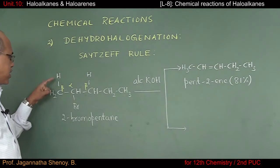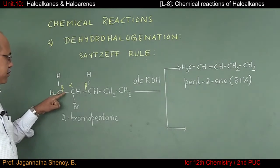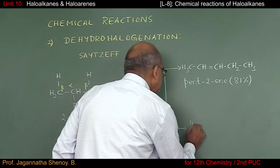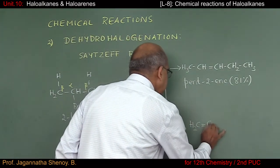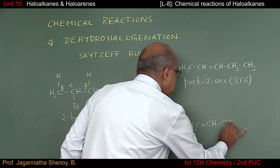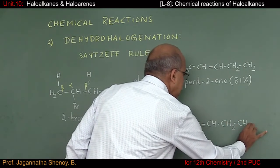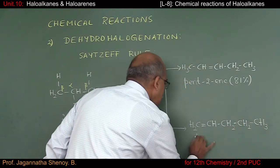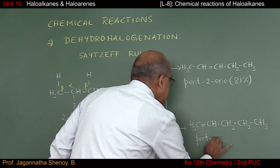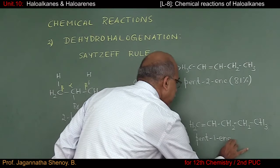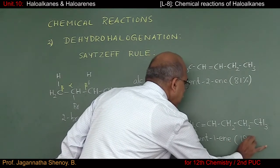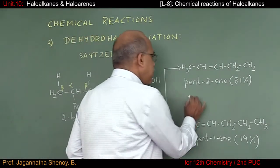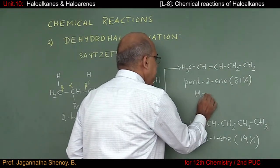If hydrogen is removed from the other beta carbon atom, the product would be pent-1-ene with a yield of 19%. In other words, the major product is pent-2-ene.